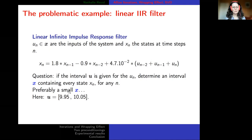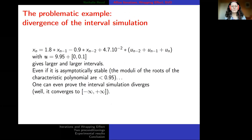The interval for the inputs was around 10. When you try to compute this using interval arithmetic — replacing u by a value plus a small interval — what you get is larger and larger intervals. You can prove this filter is stable because the moduli of the roots of the characteristic polynomial are all less than 1, even less than 0.95. But you can also prove that the interval simulation diverges, converging to the whole real interval — not what we expected.